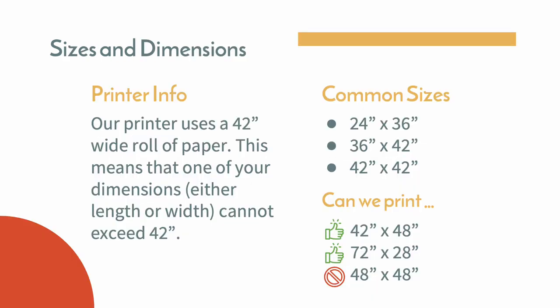The Digital Scholarship Lab printer uses a 42-inch wide roll of paper, so one of your poster dimensions cannot exceed 42 inches. A few common poster sizes are 24 by 36, 36 by 42, and 42 by 42. Always check with your instructor regarding which dimensions they want you to use before submitting a poster for printing.